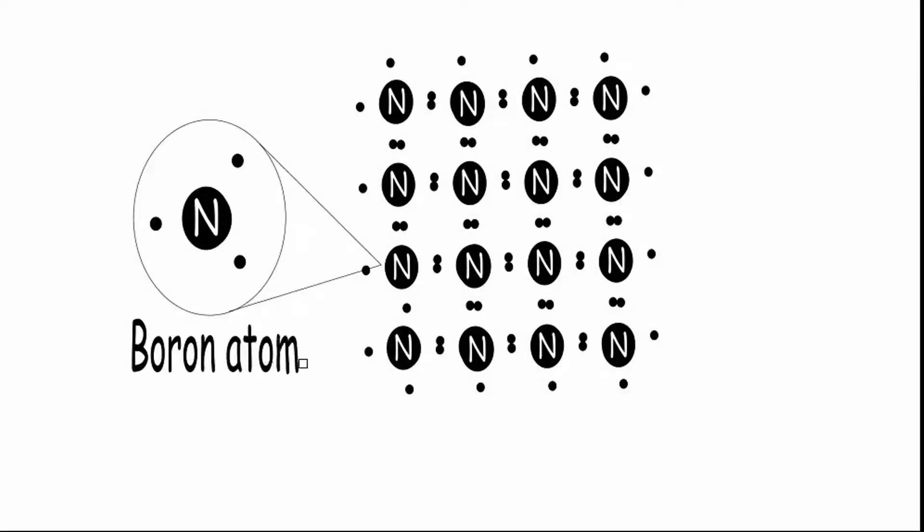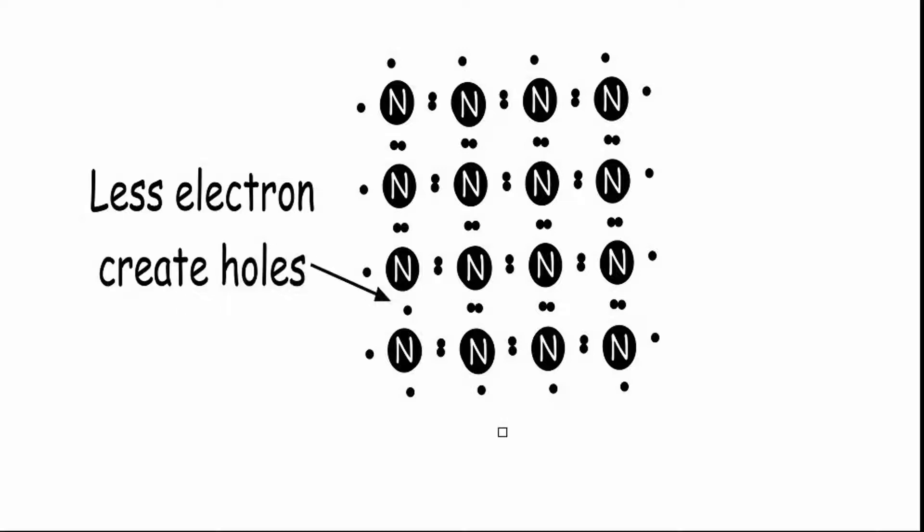Boron atom is used to make P-type semiconductor. It contains less electrons on an outermost orbit than silicon. These created holes are free to move around.